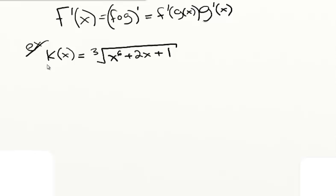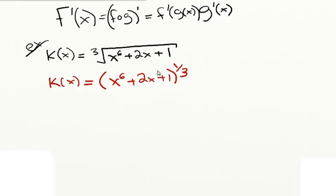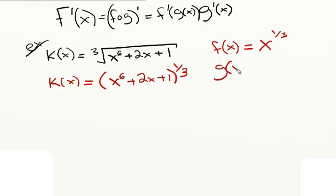Now we have another example where k of x equals x to the sixth plus 2x plus 1, all to the 1 third power. I think it's a lot easier to look at our powers as fractions rather than having that big cube root in there. Now we're going to use the chain rule. Our outside function f of x is something raised to the power of 1 third, so our outside function looks like x to the 1 third. Our inside function g of x is what's inside that 1 third power, so g of x is x to the sixth plus 2x plus 1.